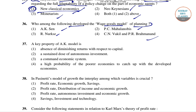For question number 36, wage goods models were initially propounded by Dr. PR Brahmananda and late Professor CN Vakil in 1955-56, presented to the Planning Commission at the time of formulation of the Second Five Year Plan. So it was CN Vakil and PR Brahmananda who propounded this wage goods model in 1955-56.